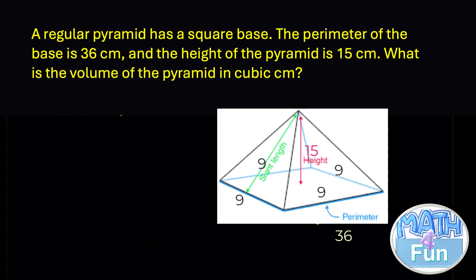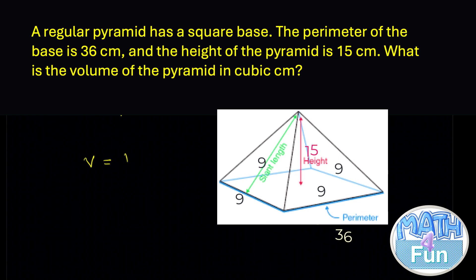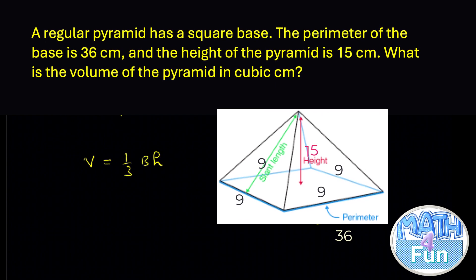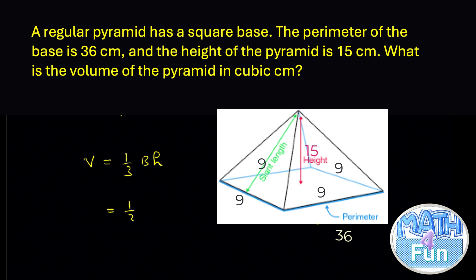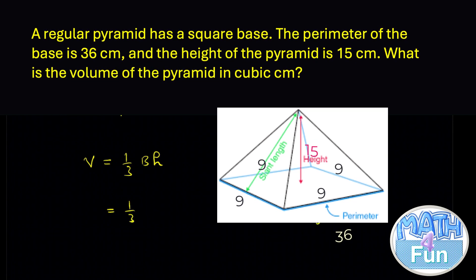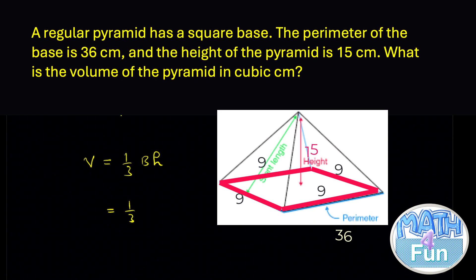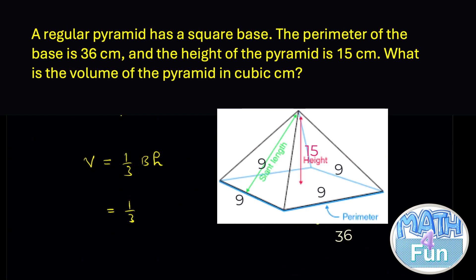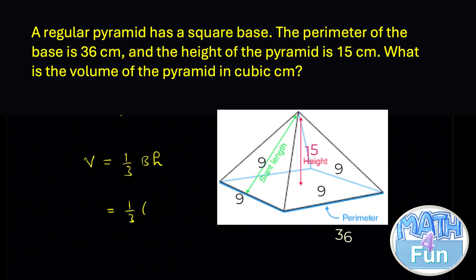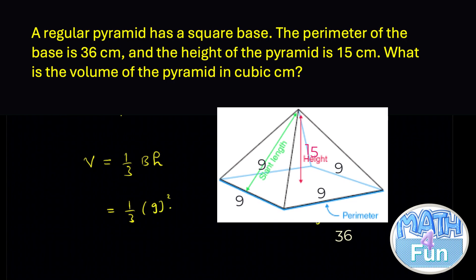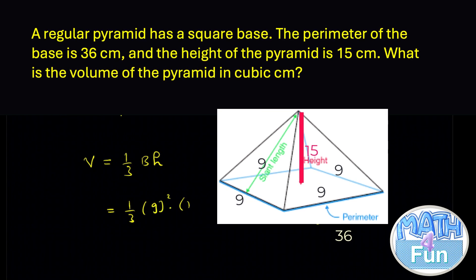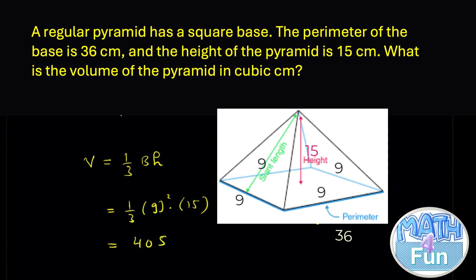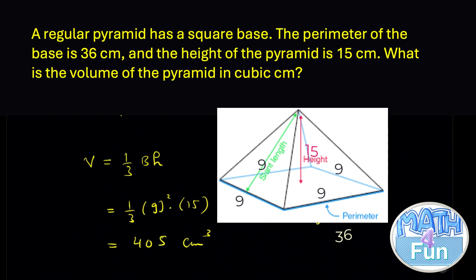The formula for the volume of a pyramid is V = (1/3) × base area × height. The base is a square, so the area is 9² = 81. Therefore V = (1/3) × 81 × 15. Calculating this gives 405 cm³.